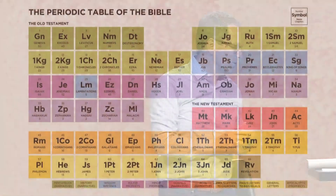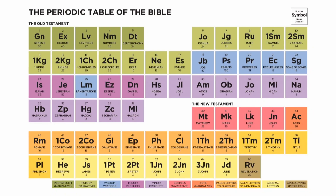Let me show you a little tool we use. We had this years ago, but this is a periodic table of the Bible. We saw someone do this and kind of put it together for us. Kind of neat, like the periodic table of elements in science. So we got the books of the Bible — Old Testament at the top, New Testament.